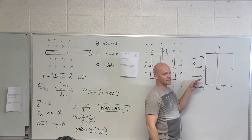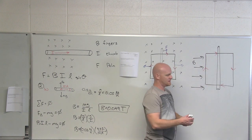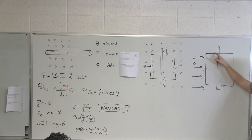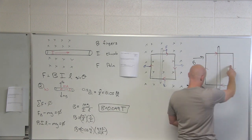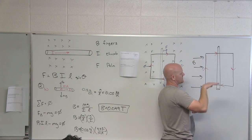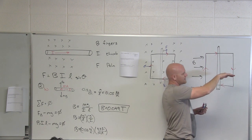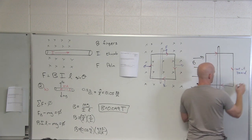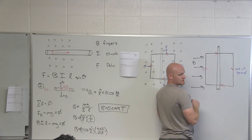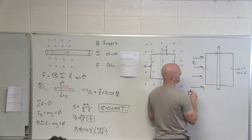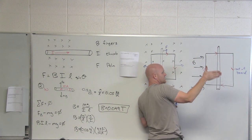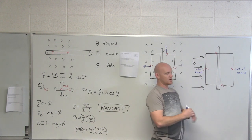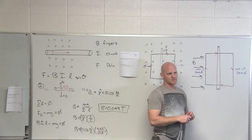Now let's contrast that with a magnetic field directed to the right instead of into the board. For the top part of the loop, the current is parallel to the magnetic field, so there's no force felt whatsoever. The right-hand side feels a force towards us — out of the board. The bottom part of the loop feels no force. The left-hand part: magnetic field points right, thumb points up, so the force goes into the board. The net force on this loop is still zero.